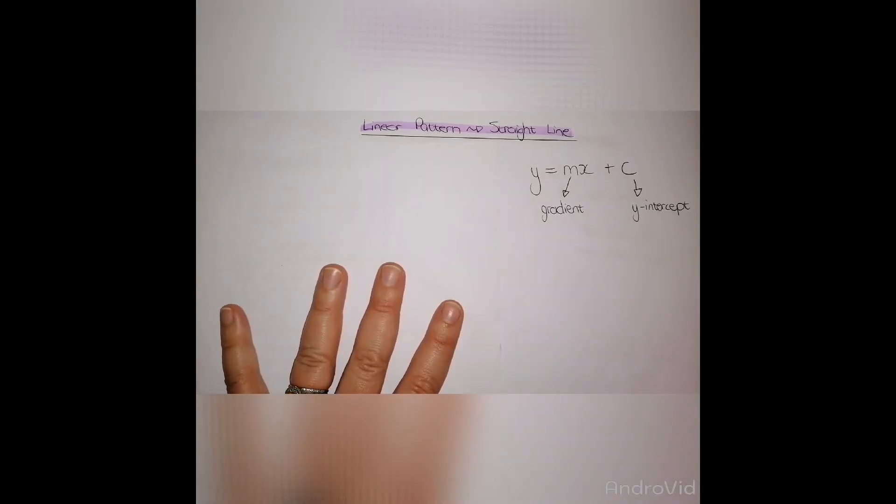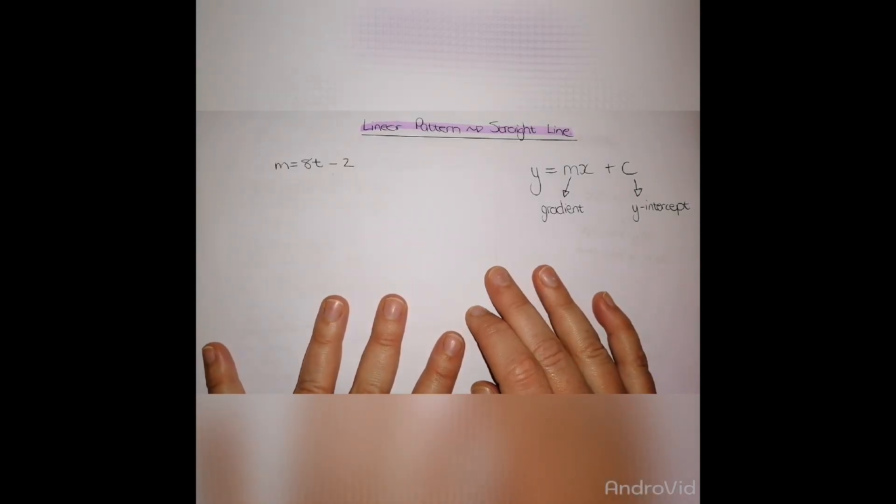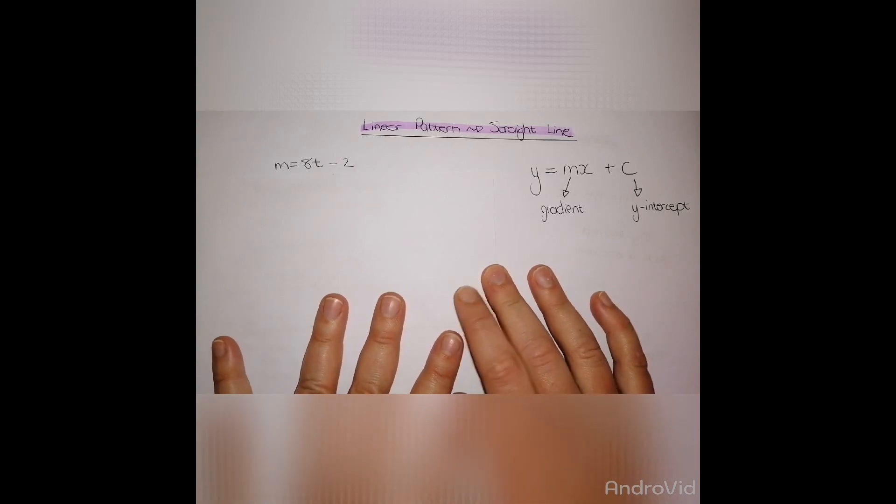When we look at the rule that we found in the linear pattern video that I loaded up, the pattern is m equals 8t minus 2.